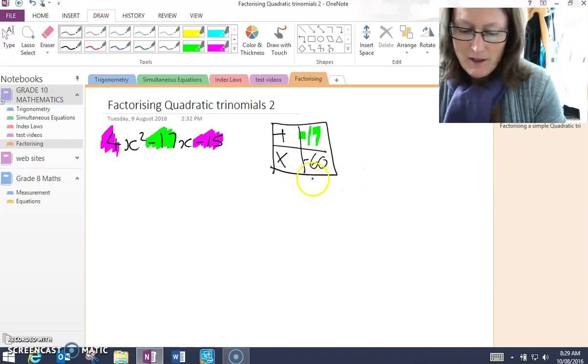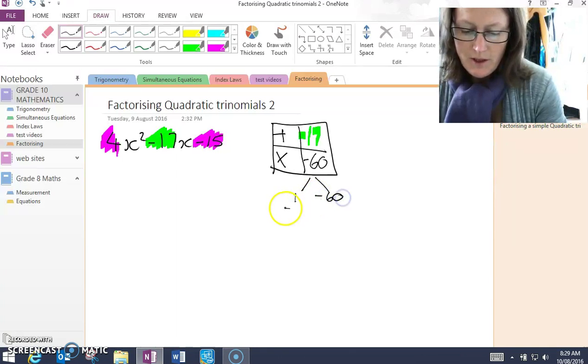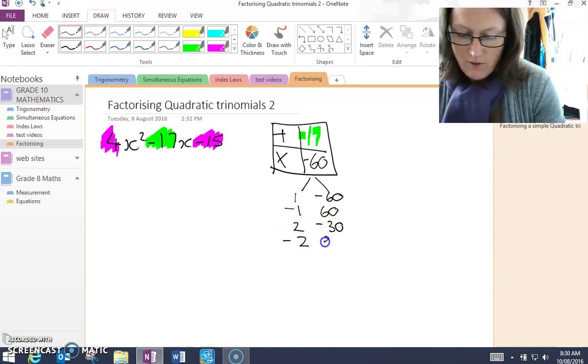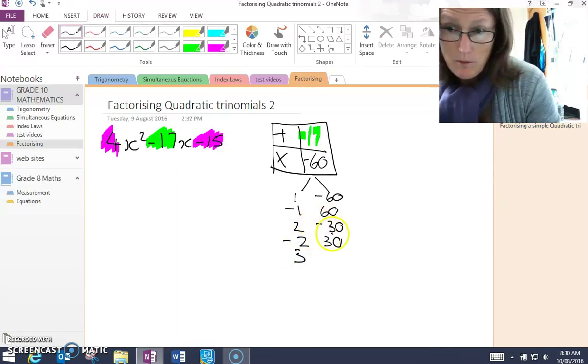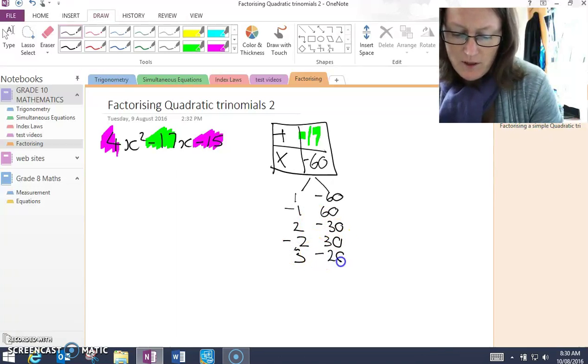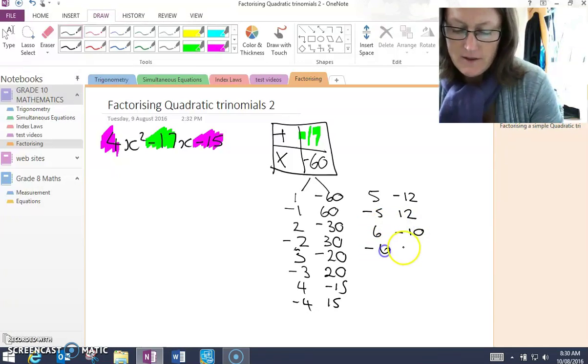So from here I write down all the factors of minus 60. So 1 and negative 60, or negative 1 and 60, 2 and negative 30, or negative 2 and 30. It's really important at this stage that we take the time to make sure we write down all the factors, so that we don't forget the pair that we may need. 3 and negative 20, negative 3 and 20, 4 and negative 15, negative 4 and 15, 5 and negative 12, negative 5 and 12, 6 and negative 10, negative 6 and 10. They're all the factors of negative 60.